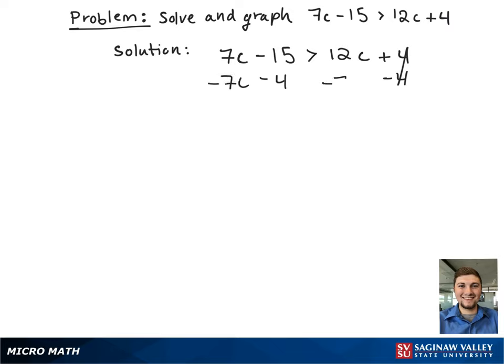Next, we're also going to subtract 7c from both sides. This will result in negative 19 is greater than 5c.